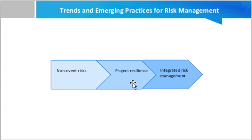Next is project resilience. The existence of emergent risk is becoming clear with a growing awareness of so-called unknowable unknowns. These are risks that can only be recognized after they have occurred. Emergent risk can be tackled through developing project resilience.